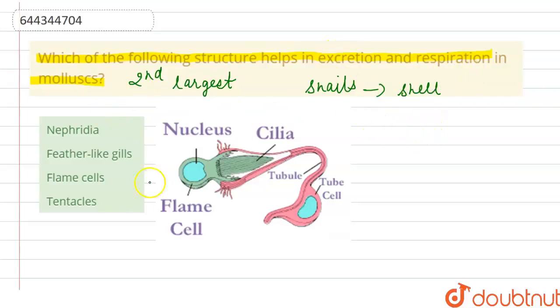For excretion and respiration, they have the presence of the flame cell. As we can see in the structure, the flame cell is present along with the nucleus and helps in removal of waste as well as respiration in mollusks, because they do not have well-developed organ systems in their body.